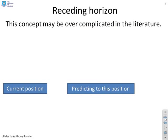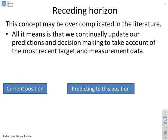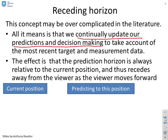Next concept: receding horizon. This is a concept that is often over-complicated in the literature, but in fact it's very simple. All it means is that we continually update our predictions and decision-making to take account of the most recent target and measurement data. The effect of this is that the prediction horizon is always relative to the current position, and thus the far end of the horizon recedes away from the viewer as the viewer moves forward. Here are a few diagrams to illustrate.